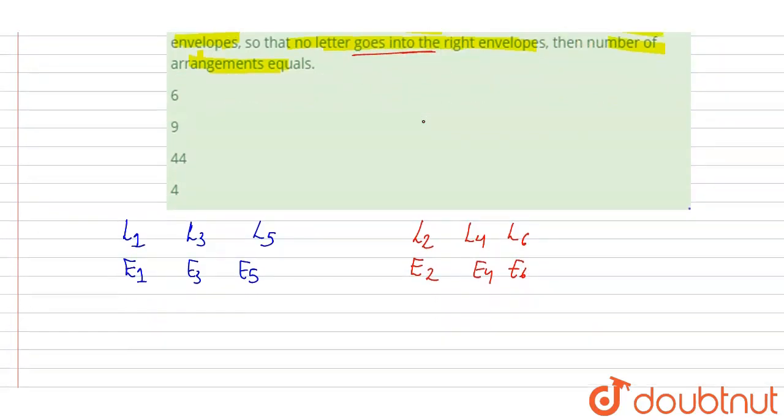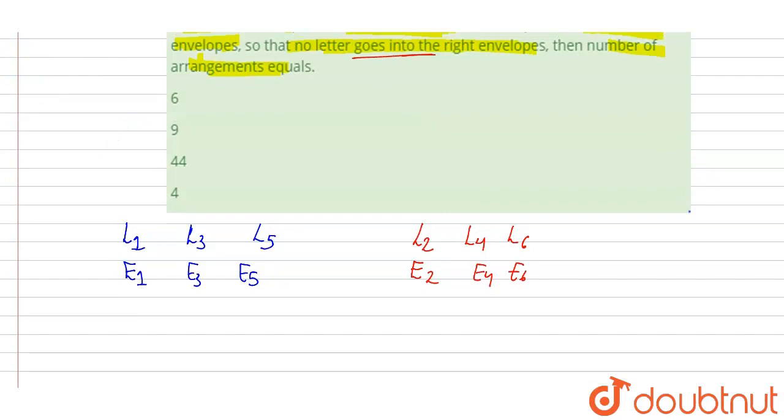So there will be a condition. It means L1 will not go into the correct envelope, so it means either L1 will go either in E3 or L1 will go either in E5.